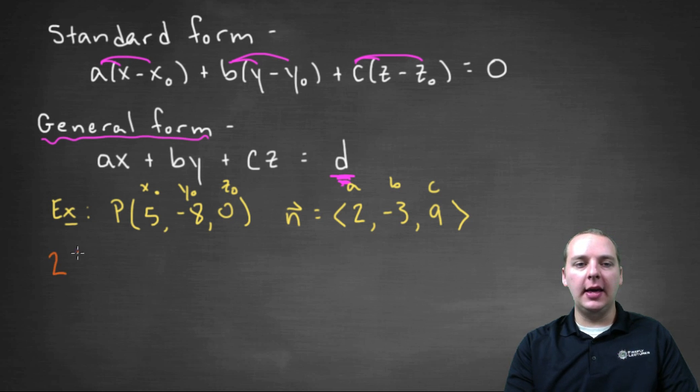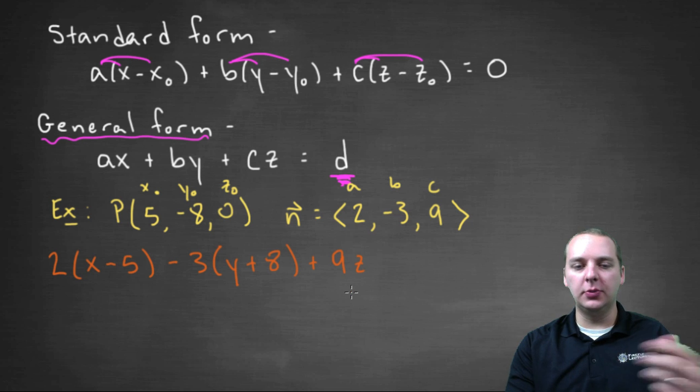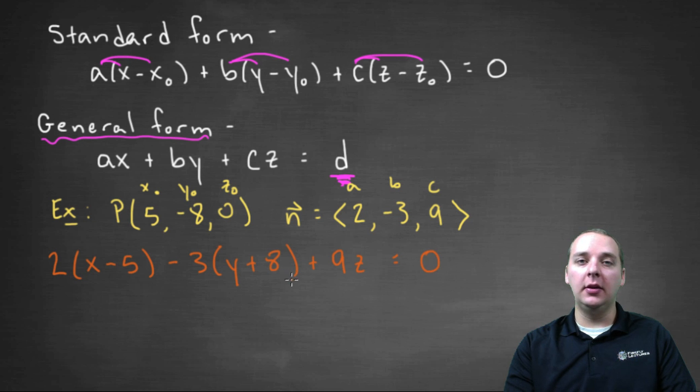So we'll have two times x minus five. We'll have minus three, that's my b value, times y plus eight, because that's minus negative eight, and then we'll have plus nine z, because it's z minus zero, so we'll just call it nine z equals zero. So this is how you write the plane in standard form, and if just for the heck of it, we're doing pretty good on time, let's just go ahead and write it in general form as well.